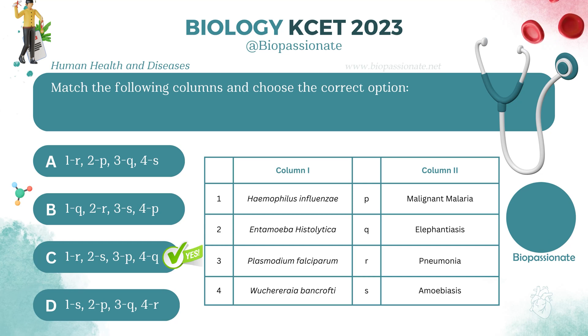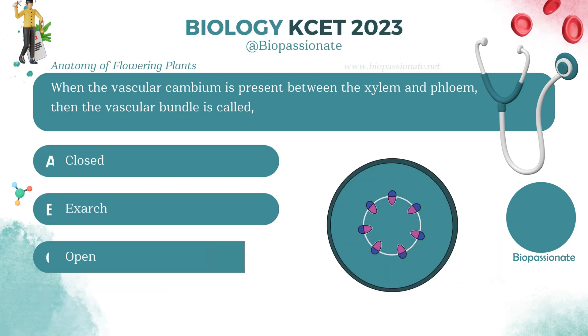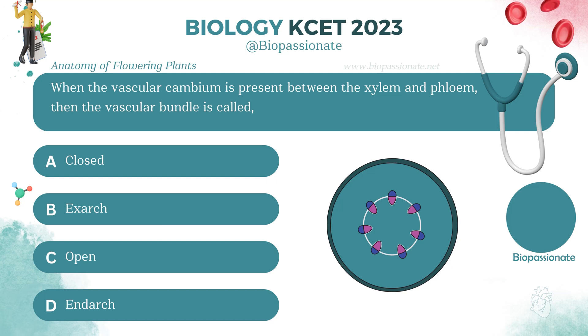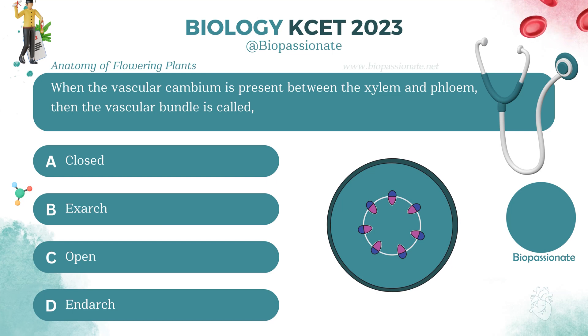Match the following columns and choose the correct option. Answer: Option C. When the vascular cambium is present between the xylem and phloem, the vascular bundle is called what? Answer: Open.